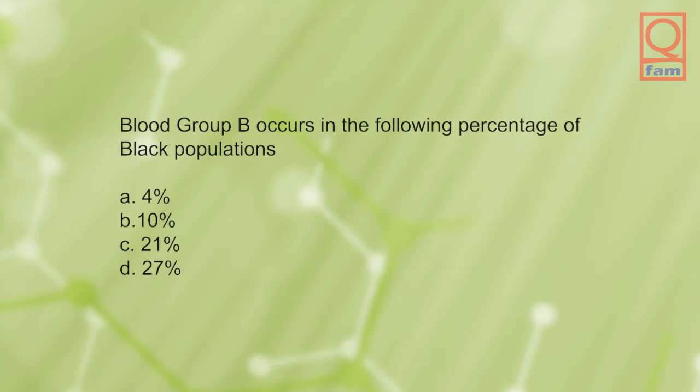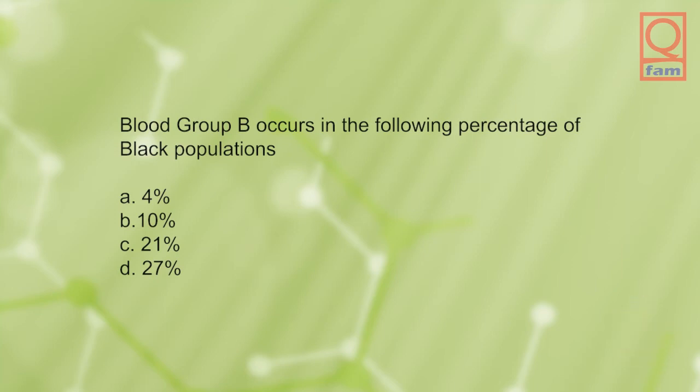Blood group B occurs in the following percentage of black populations: A) 4%, B) 10%, C) 21%, D) 27%. The answer is C, 21%.